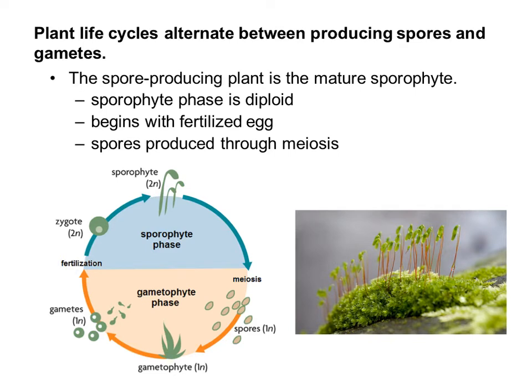Spores are produced through meiosis. Because it's meiosis, we're going to reduce the number at that point — mitosis keeps it 2N, but meiosis reduces the number of chromosomes to 1N, and that's what happens right here.